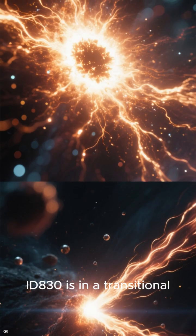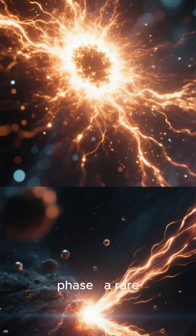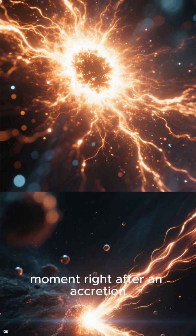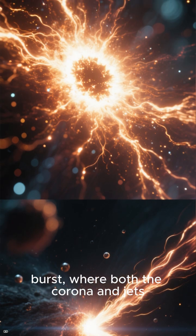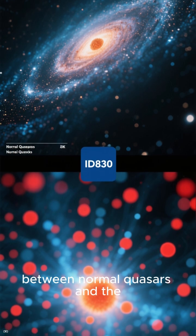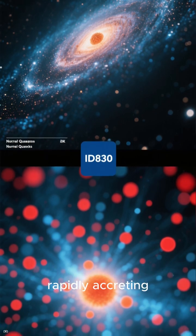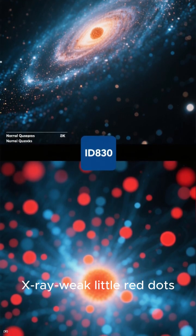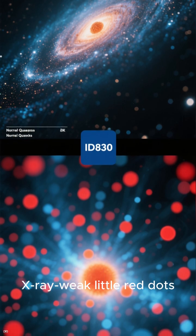Researchers think ID830 is in a transitional phase, a rare moment right after an accretion burst, where both the corona and jets are fully energized. It may be the missing link between normal quasars and the rapidly accreting little red dots.